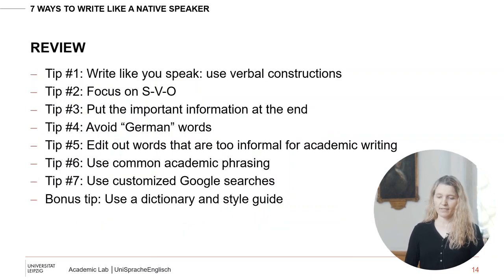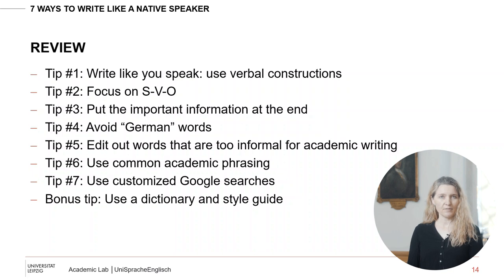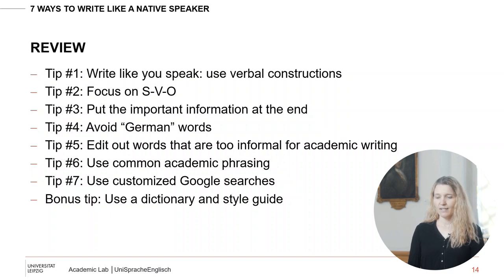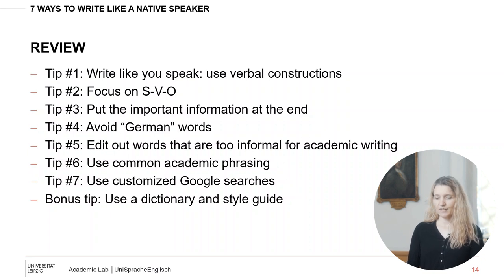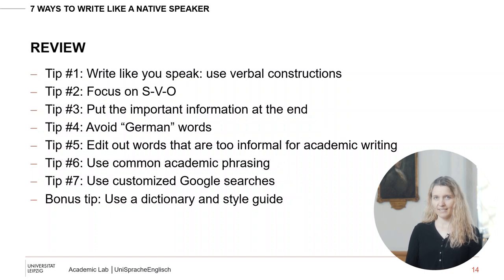To review — the seven ways to write like a native speaker: write like you speak; focus on subject-verb-object; put the important information at the end; avoid German words; edit out words that are too informal for academic writing; use common, frequent academic phrases; use customized Google searches; and make sure you have a dictionary and a style guide to refer to when you have questions. Thanks so much for your attention.